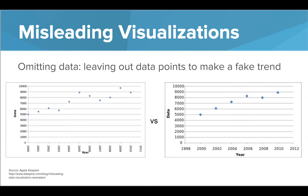Data can also be omitted or left out to make it seem like there's a trend. The graph on the right makes it look like it's constantly increasing at a steady pace, but when you compare it to the graph on the left, you can tell that there's not a steady increase — it actually goes up and down quite a lot.